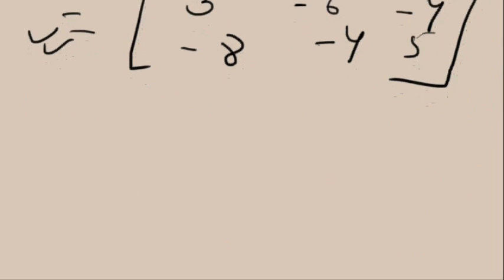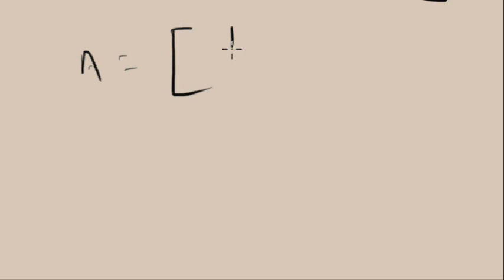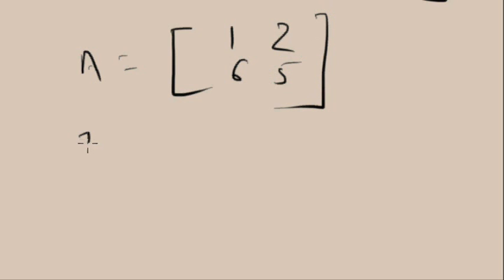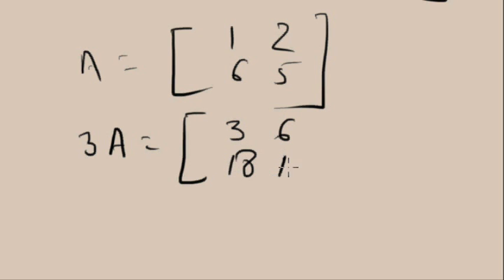Now I will explain what happens when you multiply a matrix by a single digit. Suppose A is [1, 6 / 2, 5]. What is the value of 3A? You just multiply all the elements by 3. So 3A = [3, 18 / 6, 15]. This is the value of 3A.